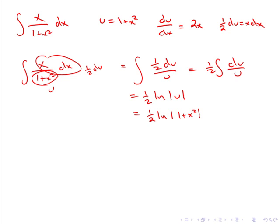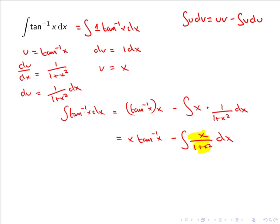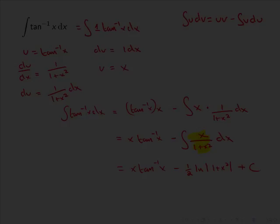Returning to the main integral: the integral of tan inverse x dx equals x tan inverse x minus the integral of x over 1 plus x squared dx. We have just found that this integral equals one half ln of 1 plus x squared. Therefore, the integral of tan inverse x dx equals x tan inverse x minus one half ln of 1 plus x squared. Adding the arbitrary constant, we get the final answer plus c.